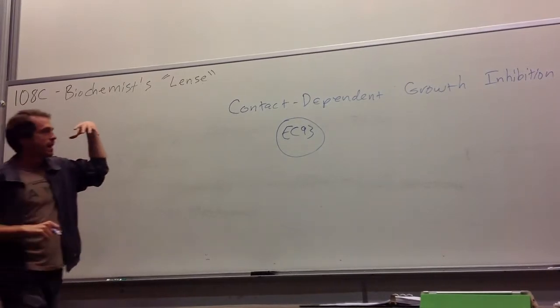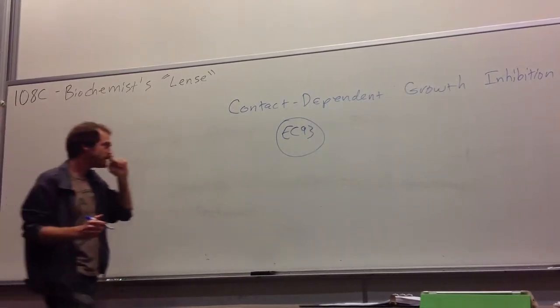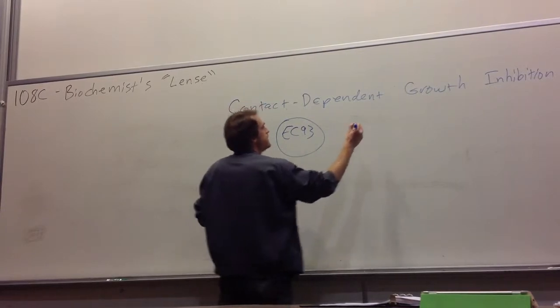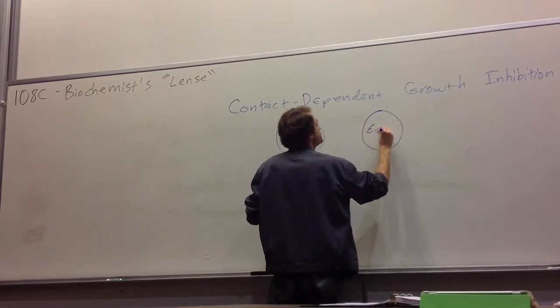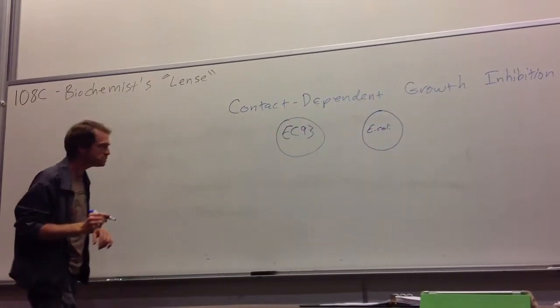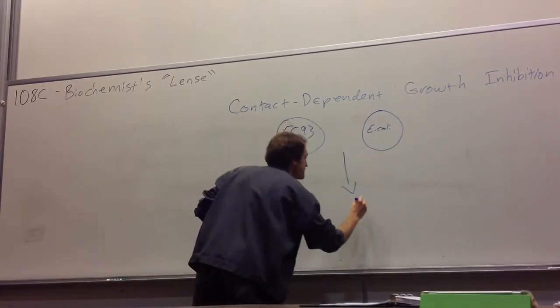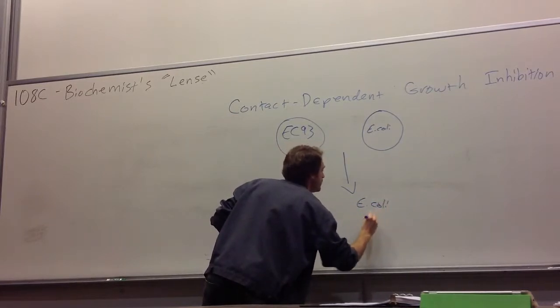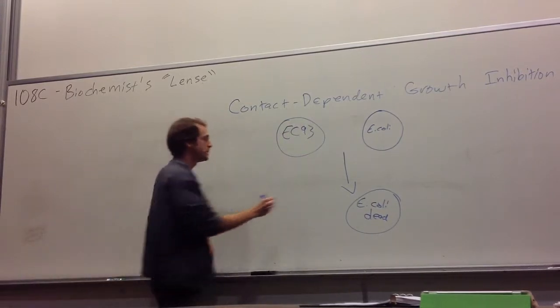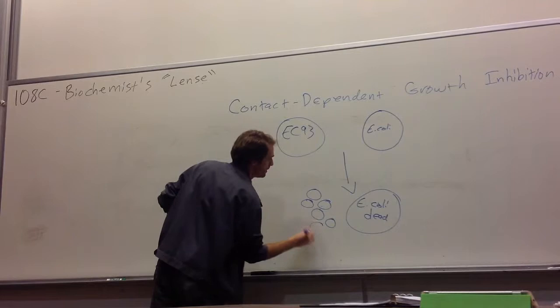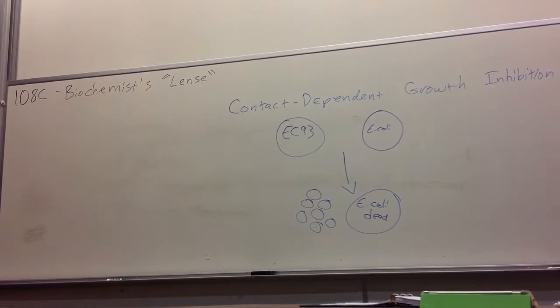So she sent this off to David Low, a geneticist here at UCSB. What David Low found is if he takes EC93 and he mixes it with some other bacteria, another E. coli, just a lab strain, what happens over time is this guy dies. It's dead. And this guy grows just fine. So we get a ton of EC93s growing, and the E. coli we put in at the start, they died.